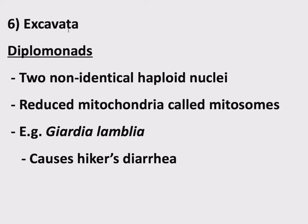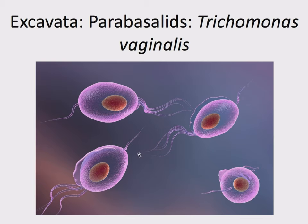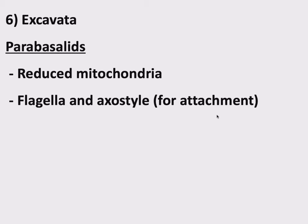There are some other Excavata besides diplomonads. Another group is parabasalids. They've got the same thing going on — reduced mitochondria — and the reason for this is not well understood, why they would go backwards from this evolutionary innovation that was fundamental to eukaryotes. Their cells have a visible feeding groove, flagella to swim around, and a structure at the tip called the axostyle, which is used for attachment or stabbing into something and keeping it in place. So parabasalids have flagella and an axostyle for attachment.